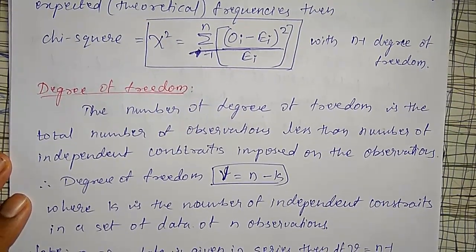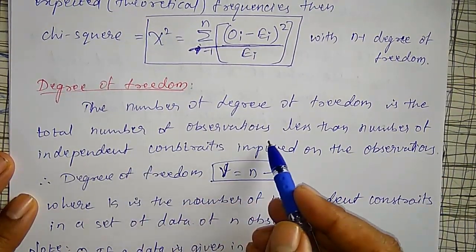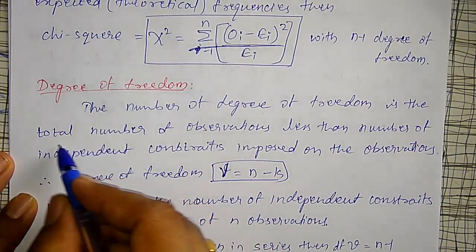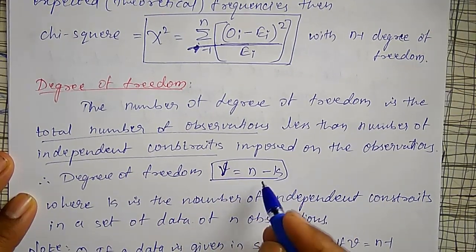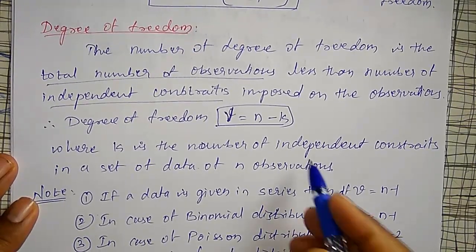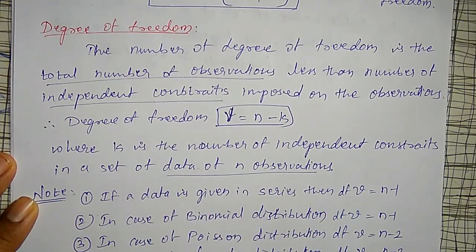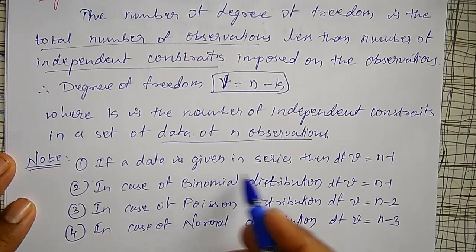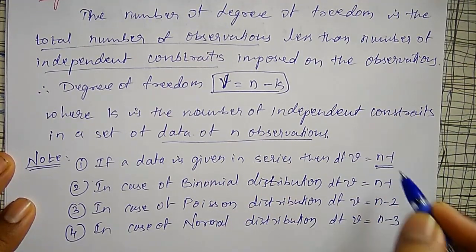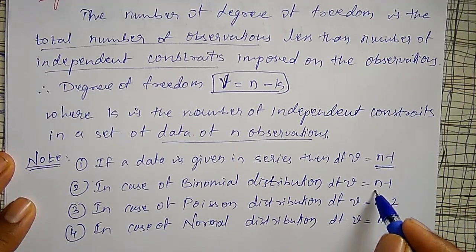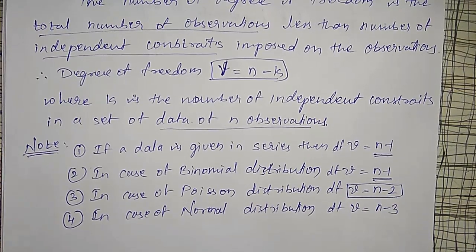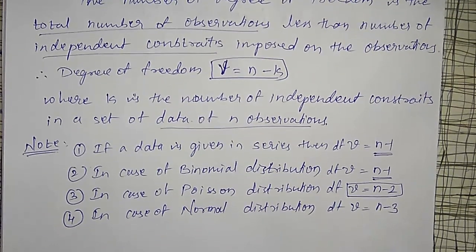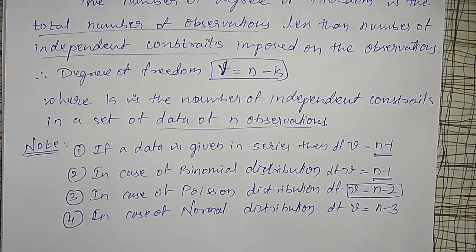The number of degrees of freedom is the total number of observations less the number of independent constraints. Here, n is the number of observations and k is the number of independent constraints. If data is given in a series, degree of freedom is n minus 1. For binomial distribution, degree of freedom is n minus 1. For Poisson distribution, it is n minus 2. For normal distribution, it is n minus 3, because normal distribution has three constraints, Poisson has two, and binomial has one.